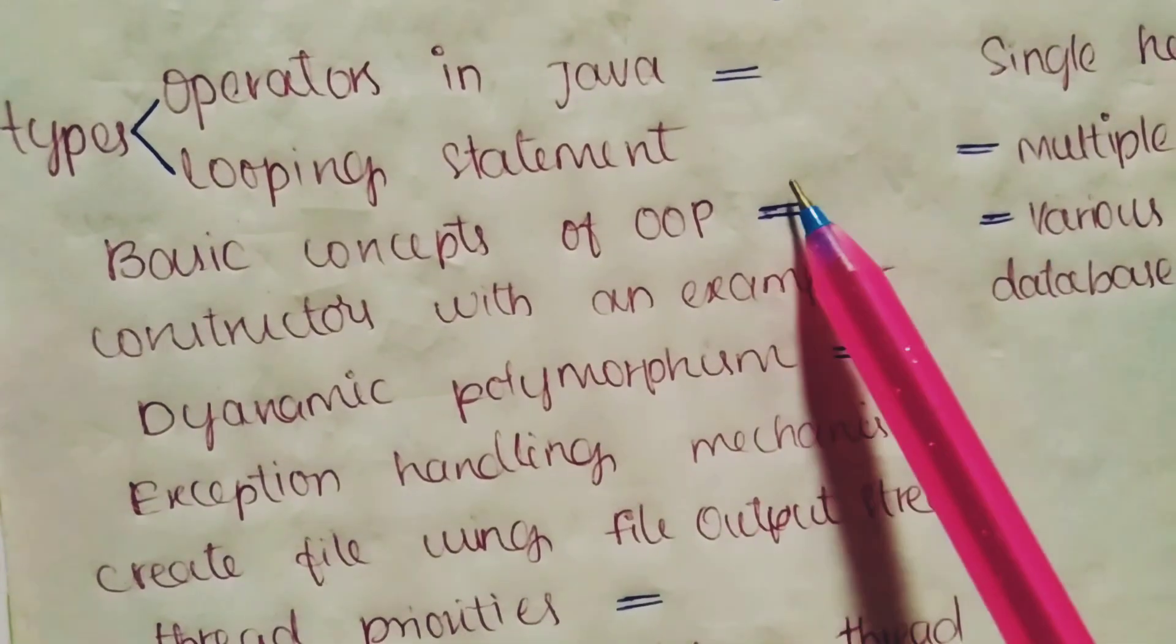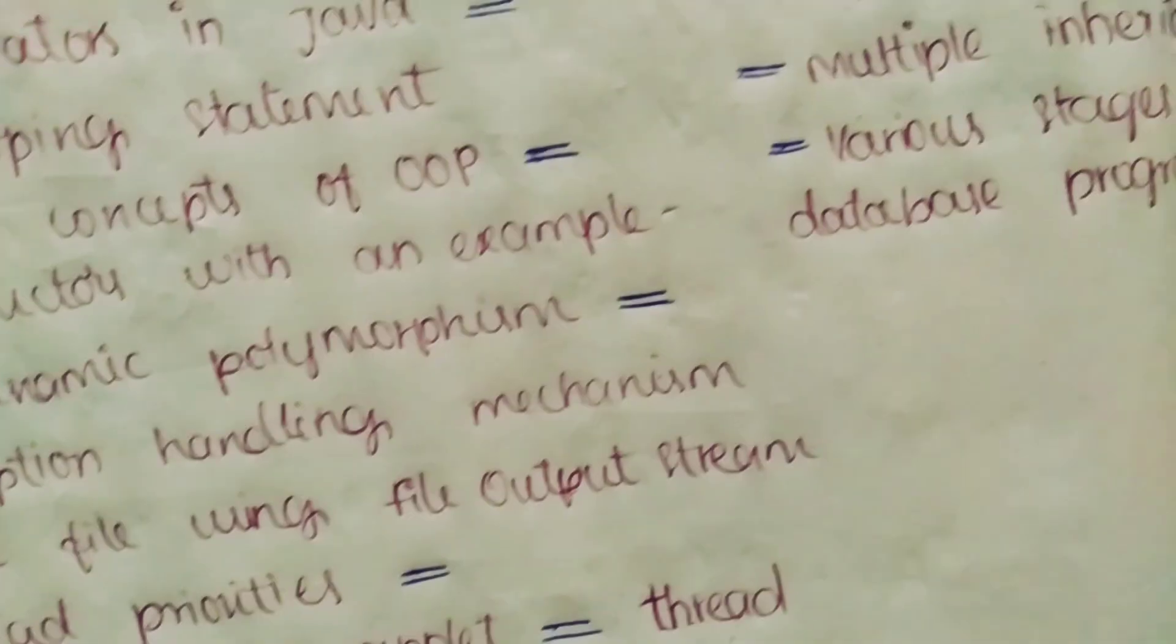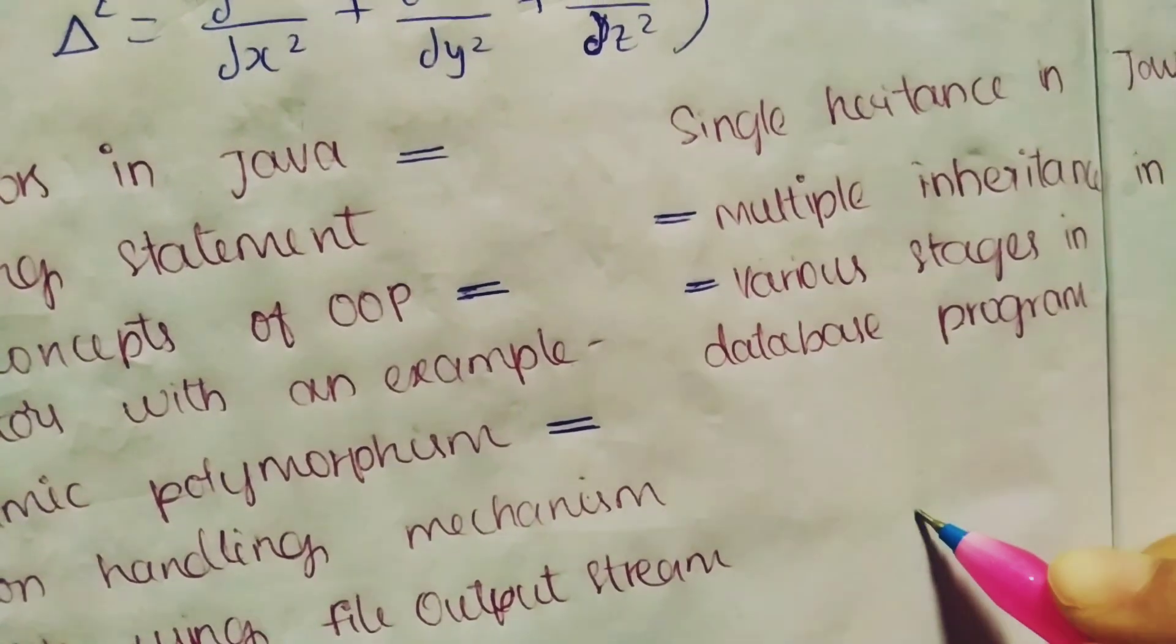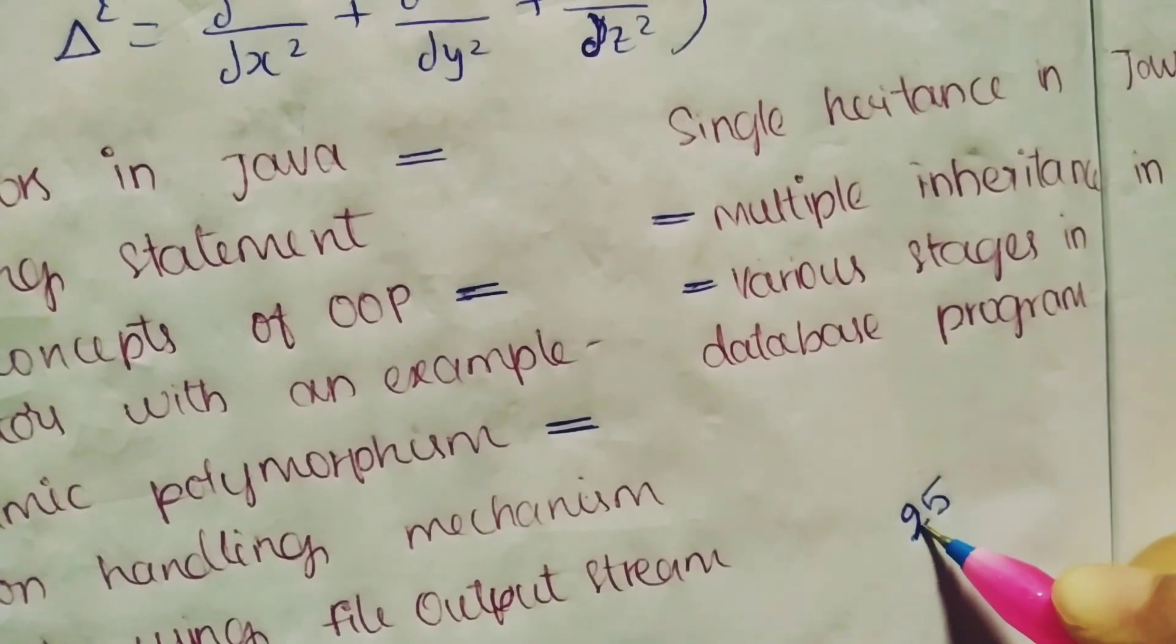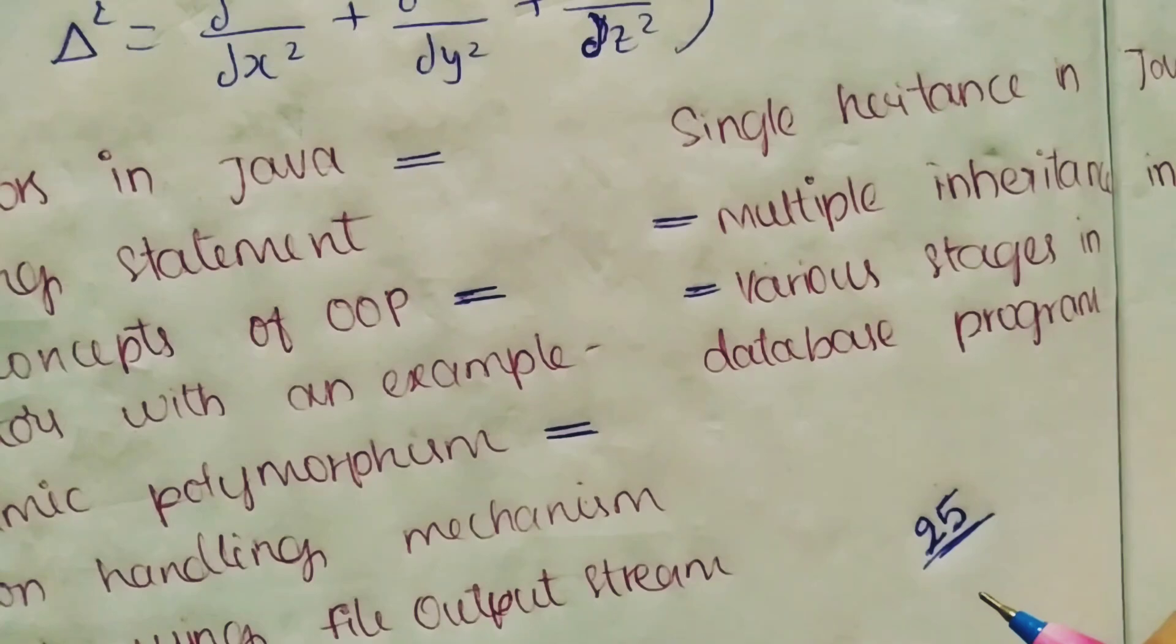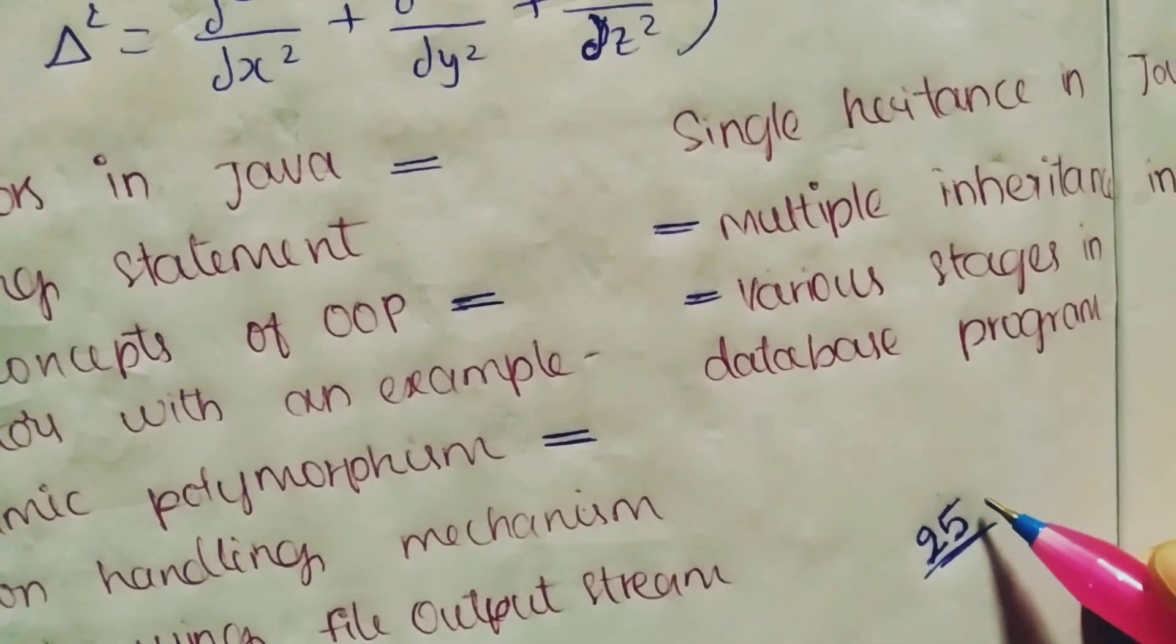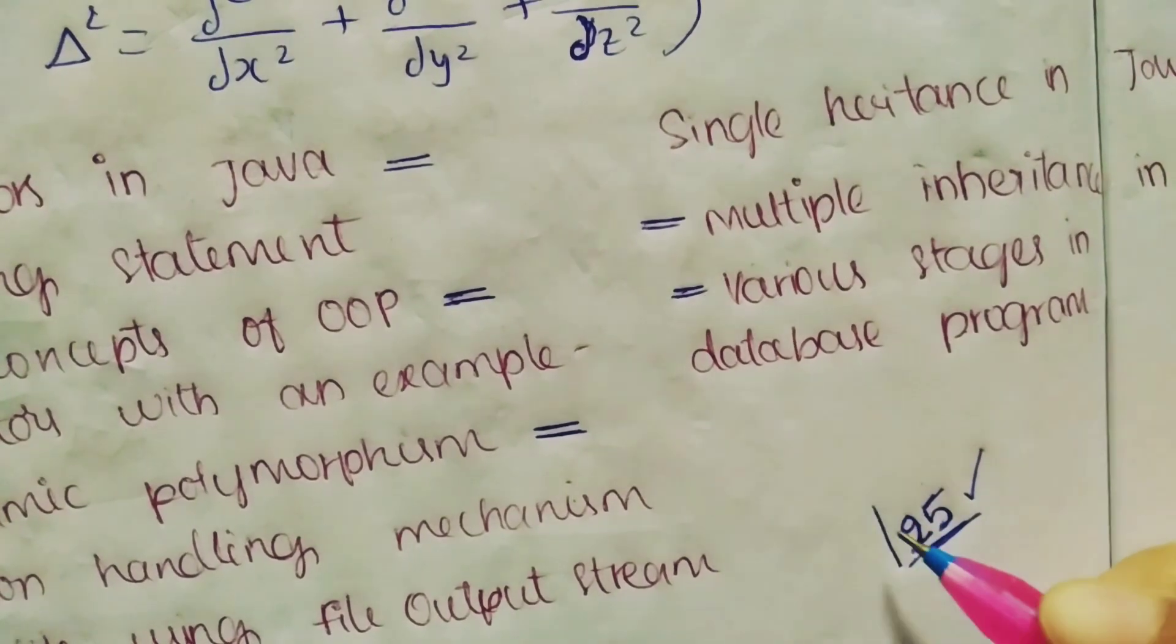First of all, in this video, I'll cover a total of 25 questions. These 25 questions are important. Among these 25, I'll tell you the top 15. Top 15 means these 15 questions are asked very repeatedly. All these questions are important.